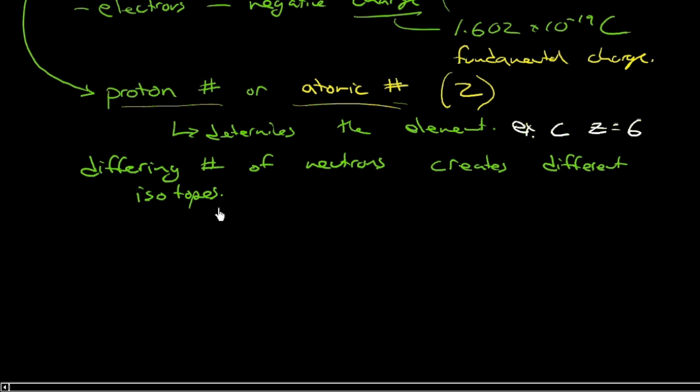So an example of that would be carbon 13. Well, it's carbon. So it's got to have six protons. Otherwise, it's not carbon. But if it's got a mass of 13, these mass units, in fact, sometimes they're called atomic mass units, then it's going to have seven neutrons.